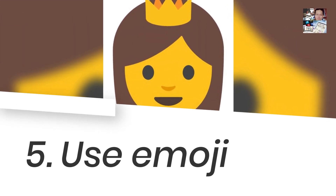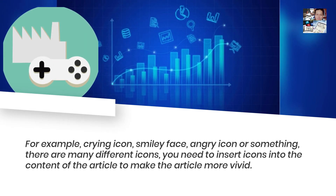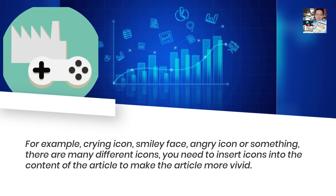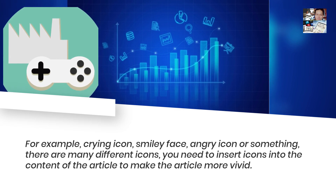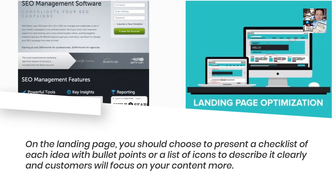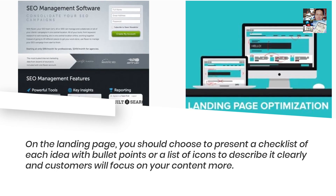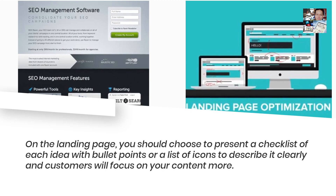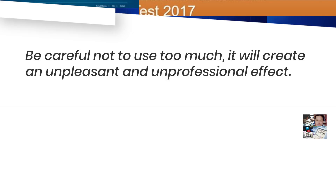Number 5: Use Emoji. In Facebook ads, you should use emoji icons — for example, a crying icon, smiley face, angry icon, and many different icons. You need to insert icons into the content of your article to make it more vivid. On the landing page, you should use a checklist with bullet points or a list of icons to describe your ideas clearly so customers will focus on your content more. Be careful not to use too many, as it will create an unpleasant and unprofessional effect.